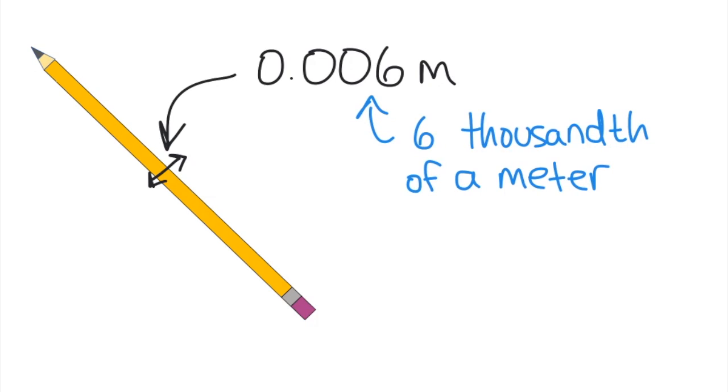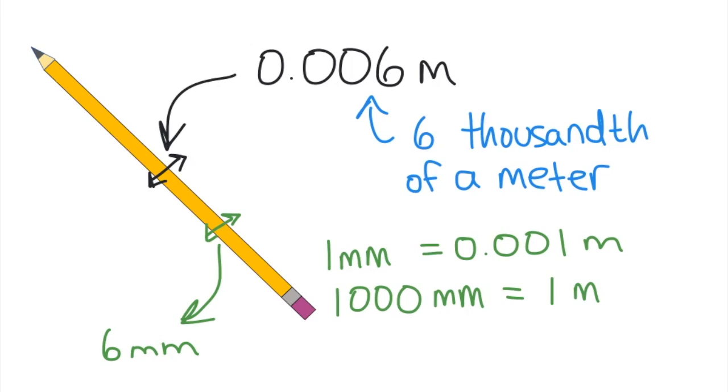However, the metric system is designed to express measurements in the most sensible way possible. For instance, a millimeter is a thousandth of a meter. Another way to put it is that there are a thousand millimeters in one meter. If we use millimeters to measure the pencil width, we can see that the pencil is six millimeters across. Six is much more convenient than 0.006.